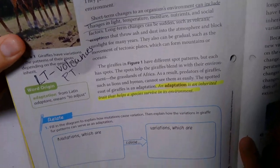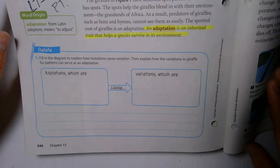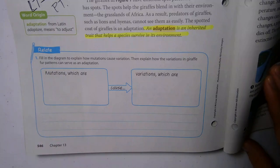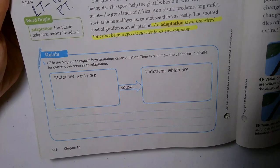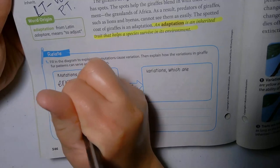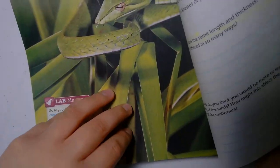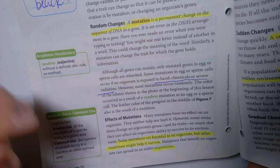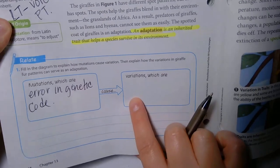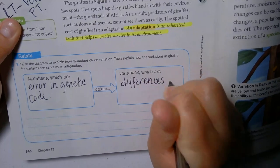It says fill in the diagram to explain how mutations cause variation, then explain how variations in giraffe fur patterns can serve as an adaptation. A mutation is like an error in genetic code — a permanent change in a sequence of DNA. This causes variations, which are differences in traits.